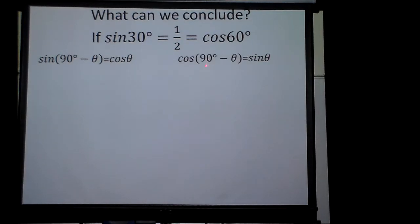And conversely, if I take the cosine of 90 minus theta, meaning here, if theta is 30 degrees, what's 90 minus 30? It would be 60. 90 minus 30 would be 60.